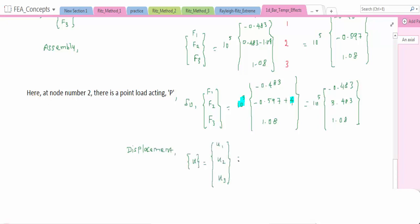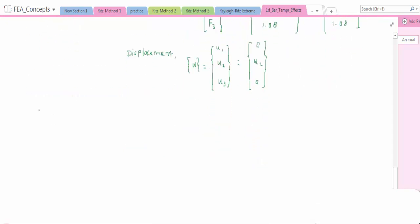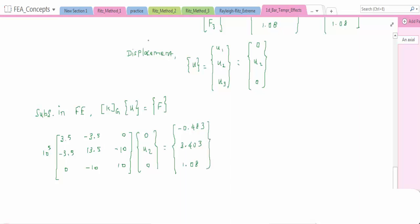Now displacement U: U1, U2, U3. We know that U1 and U3 is fixed, so U1 is 0, U2, and U3 is equal to 0. Substitute all these equations in your FE equation. So this is your stiffness matrix and 0, U2, U3 displacement, and 10^5 into [0.483; 3.403; 1.08]. So since U1 is 0, U3 is 0, first row first column and third row third column is neglected.